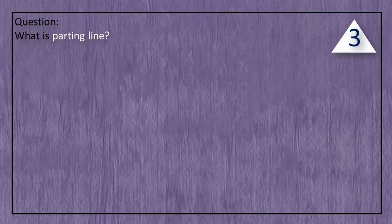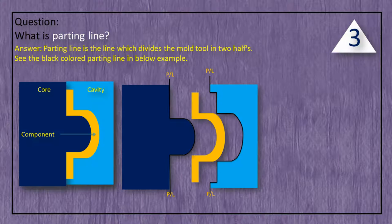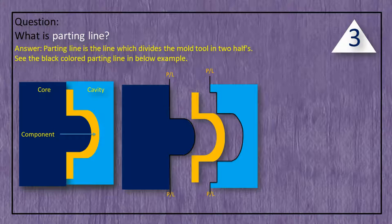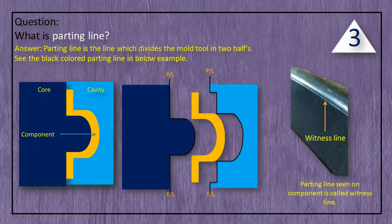Question: What is a parting line? Answer: The parting line is the line which divides the mold tool into two halves. See the black colored parting line in the example below. The parting line seen on a component is called a witness line.